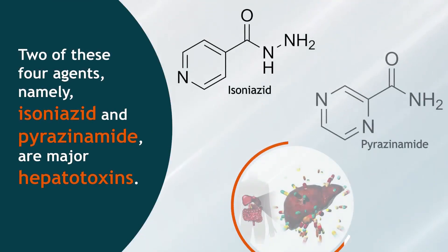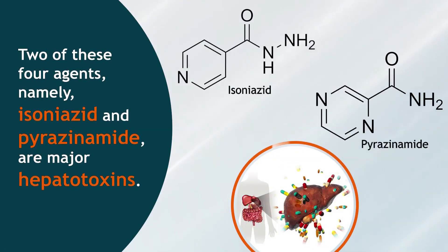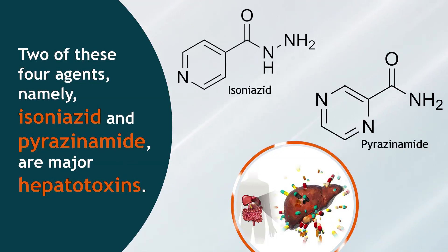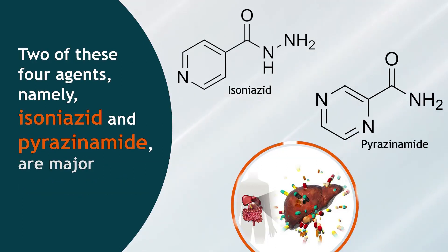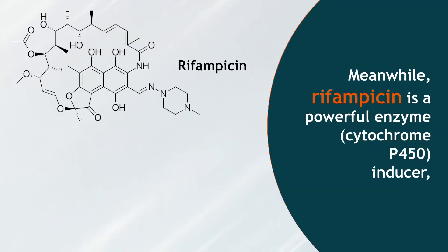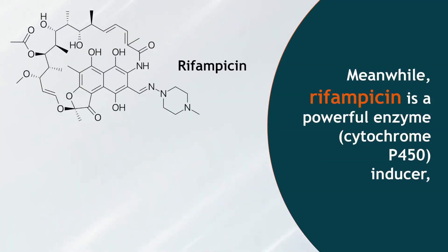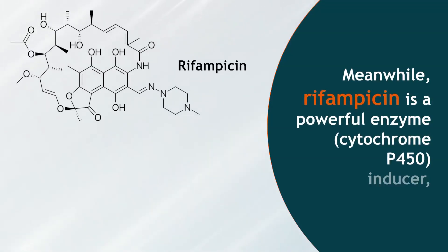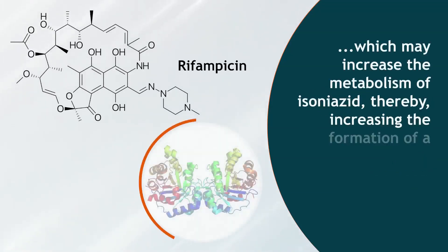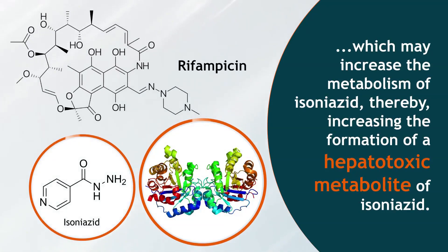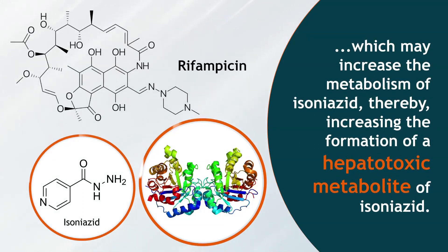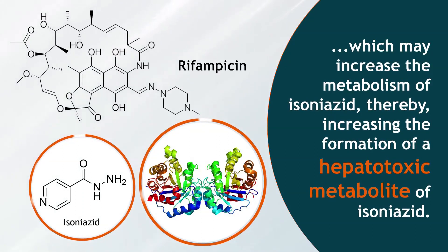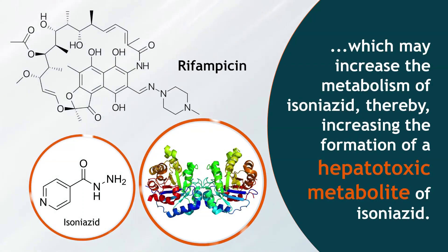Two of these agents, namely isoniazid and pyrazinamide, are major hepatotoxins. Meanwhile, rifampicin is a powerful enzyme — a cytochrome P450 inducer — which may increase the metabolism of isoniazid, thereby increasing the formation of the hepatotoxic metabolite of isoniazid.